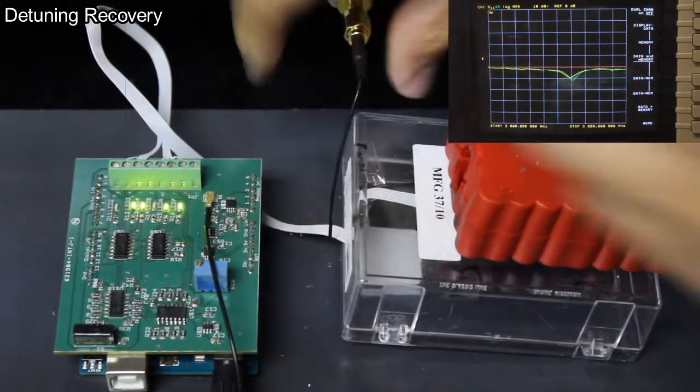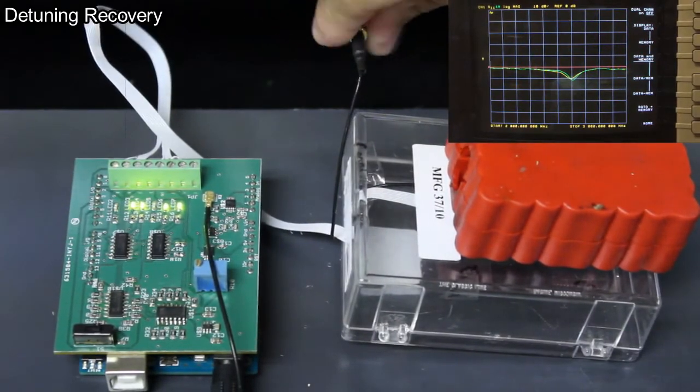If we recheck the antenna on the network analyzer, it should almost match the green line, our unobstructed case.